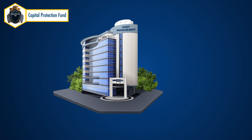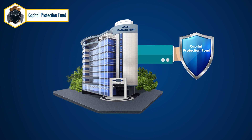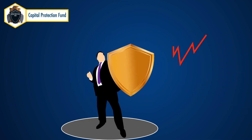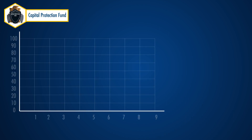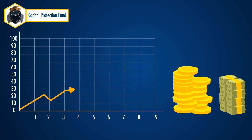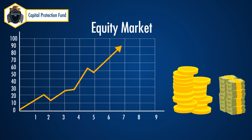So, to prevent capital destruction, asset management companies came up with a product known as Capital Protection Fund. The main objective of the fund is to safeguard the capital of the investor during market downturns and uncertainty, while at the same time providing opportunities for capital appreciation during upturns of the equity markets.